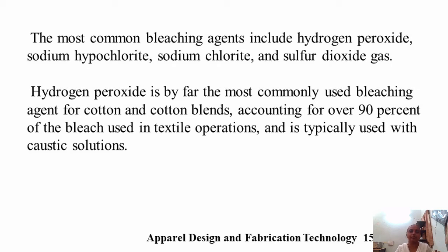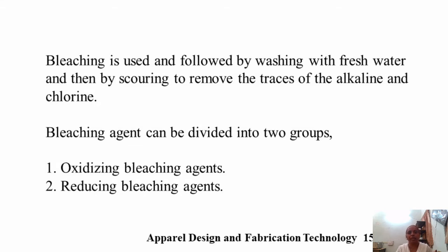The most common bleaching agents include hydrogen peroxide, sodium hypochlorite, sodium chloride, and sulfur dioxide gas. Hydrogen peroxide is by far the most commonly used bleaching agent for cotton and cotton blends, accounting for over 90% of the bleach used in textile operations, and is typically used with caustic solutions. Bleaching is followed by washing with fresh water and then by scouring to remove traces of alkaline and chlorine.